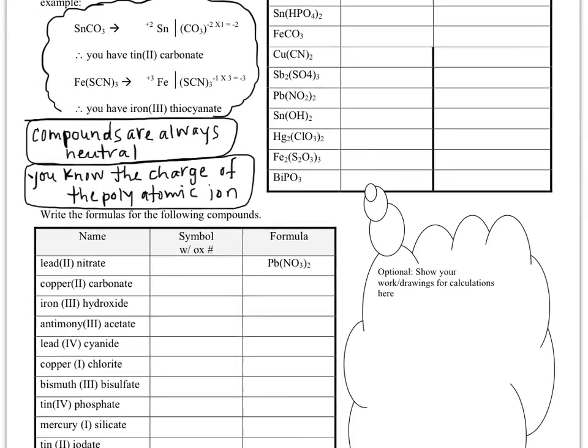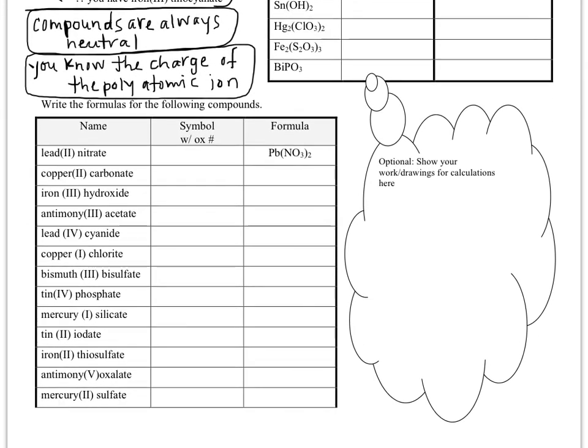If we go down to the second table, you'll see that we're just going in the opposite direction, much like we did in the ionic bonding packet. So here, remember that the Roman numeral tells us the charge of that special metal.